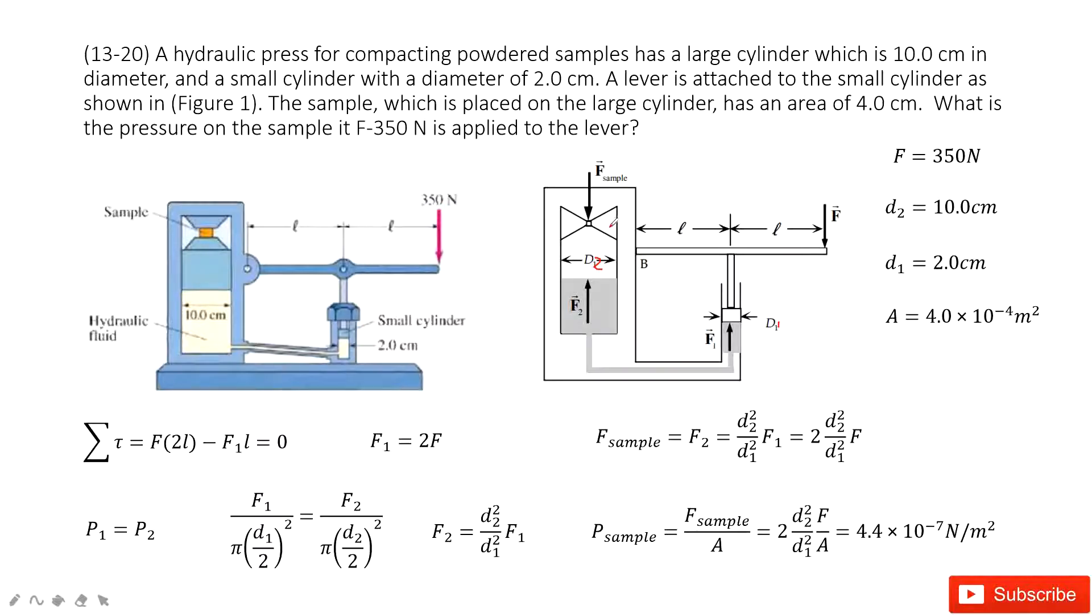We need to find the pressure for this sample. First thing we need to find the force for the sample. The force for the sample must equal F2 because this sample is balanced. So if we want to find F2, we need to look at F1.